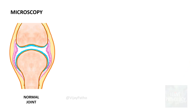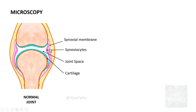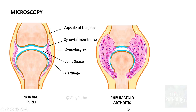Now let's look into the features on microscopy. We need to know what the normal joint looks like. That's the cartilage — the blue one is the cartilage. This is the joint space. This is the synovial membrane lined by a single layer of synoviocytes. That is the capsule of the joint.